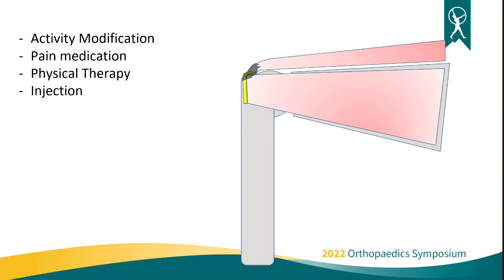Younger patients with acute traumatic tears — we actually want to get those fixed right away. They do much better if you fix them immediately. Our older, more degenerative tears — you can spend a little more time trying to do some other things to treat it. With therapy, we have good evidence that the 50% who respond will typically respond within those first two months. If they do two months of therapy and they're not showing signs of improvement, studies show that another six months or two years of therapy won't get it better. So they have to make a decision at that two-month mark: either live with this or get it fixed.